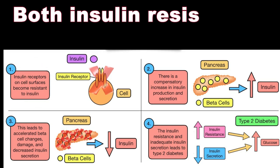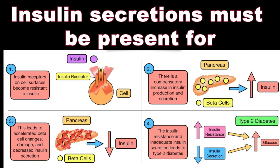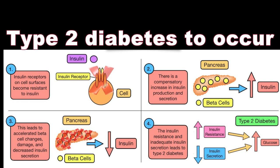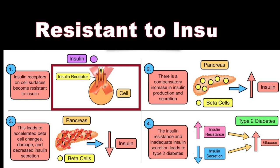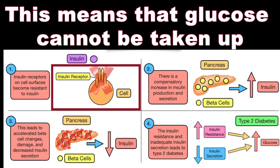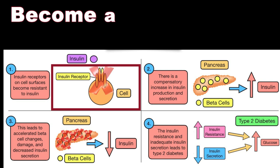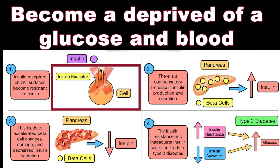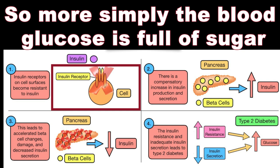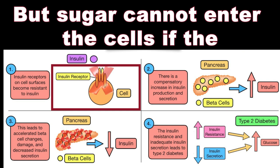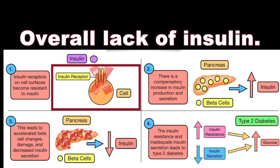In pathophysiology, both insulin resistance and inadequate insulin secretion must be present for type 2 diabetes to occur. In type 2 diabetes, the insulin receptors on cell surfaces become resistant to insulin, meaning glucose cannot be taken up into the cell from the bloodstream. The cell becomes deprived of glucose and blood glucose levels inappropriately rise — simply put, the blood is full of sugar but sugar cannot enter the cells.